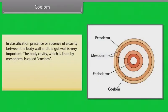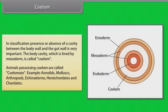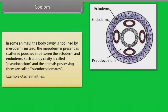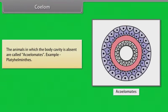In classification, the presence or absence of a cavity between the body wall and the gut wall is very important. The body cavity lined by mesoderm is called coelom, and animals possessing it are called coelomates. In some animals the body cavity is not lined by mesoderm; instead, the mesoderm is present as scattered pouches between the ectoderm and endoderm — this is called pseudocoelom and the animals are called pseudocoelomates. Example: Ascaris (Aschelminthes). Animals in which the body cavity is absent are called acoelomates. Example: Platyhelminthes.